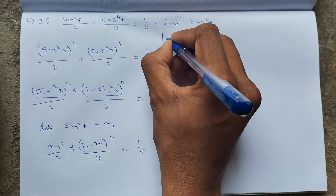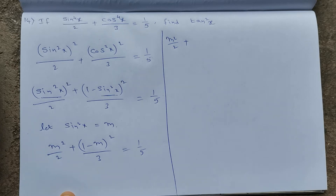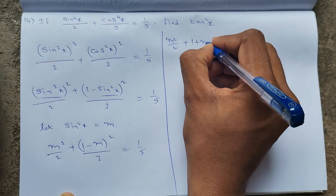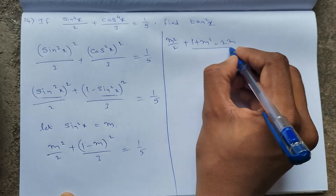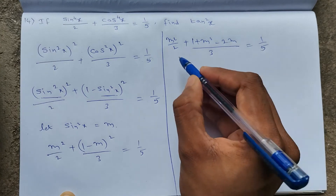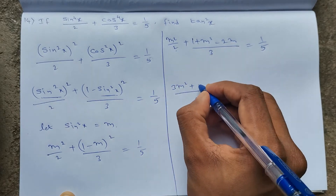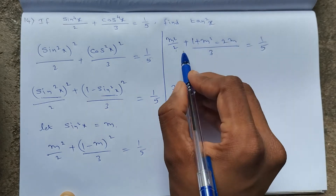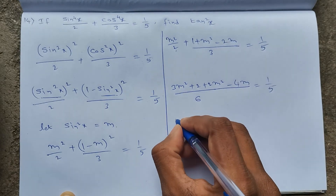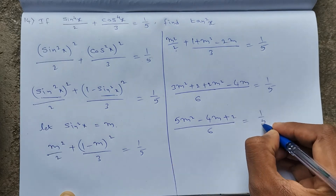Expanding: M²/2 + (1 − 2M + M²)/3 = 1/5. Taking LCM of 2 and 3 = 6 and cross-multiplying: 3M² + 2(1 − 2M + M²) = 6/5. Simplifying the numerator: 3M² + 2 + 2M² − 4M = 5M² − 4M + 2. So (5M² − 4M + 2)/6 = 1/5.